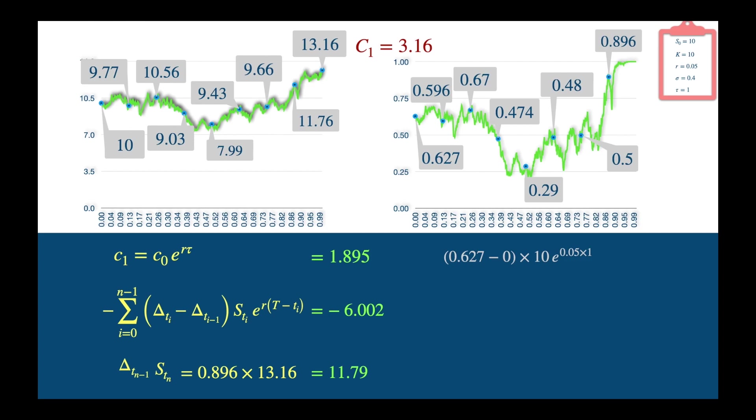We then need to rebalance the delta to 0.596 at the next observation, at the price of 9.77, and then to 0.67, and so forth until the penultimate observation when we rebalance the delta to 0.896 at the price of 11.76. If you add all these, you will see the net sum of cash flows resulting from the rebalancing of delta hedge is minus 10.46. And now if we add the three components, we get 3.225, which is closer to the payoff we want to replicate.